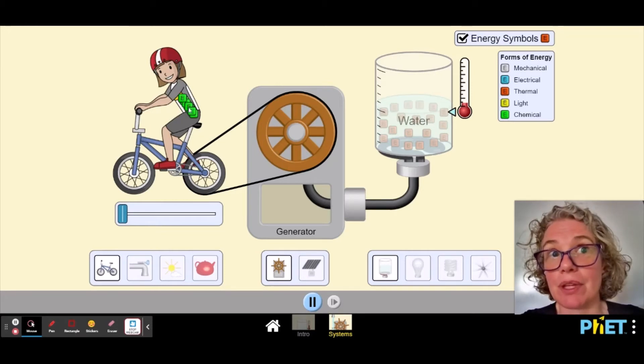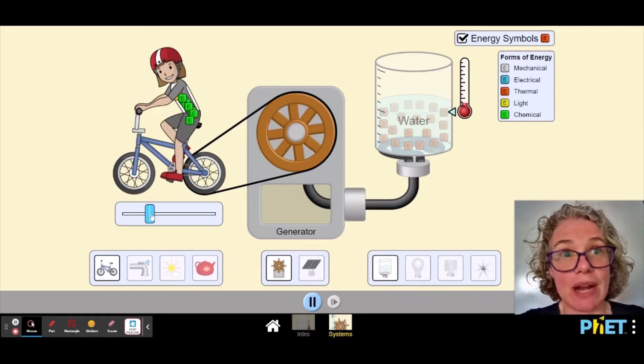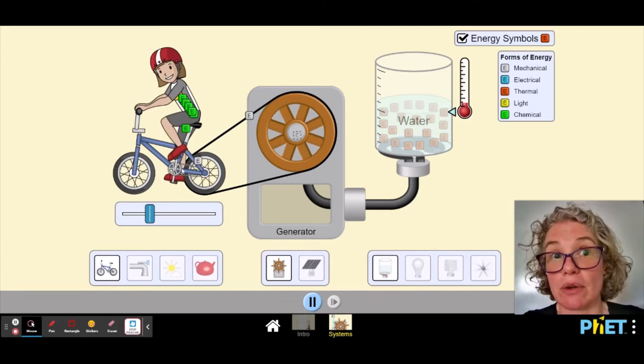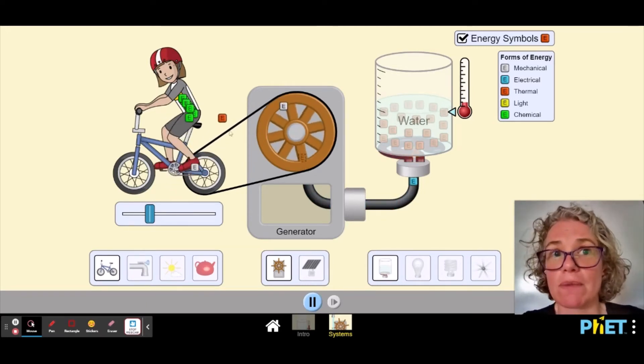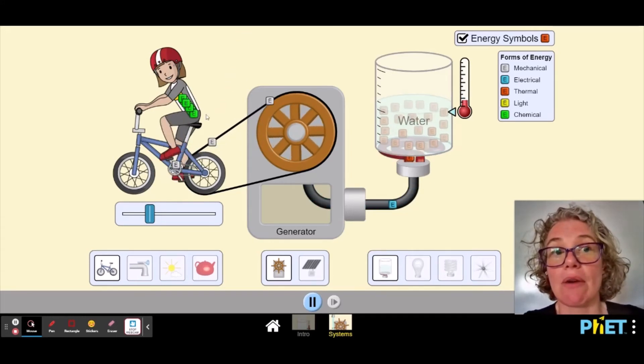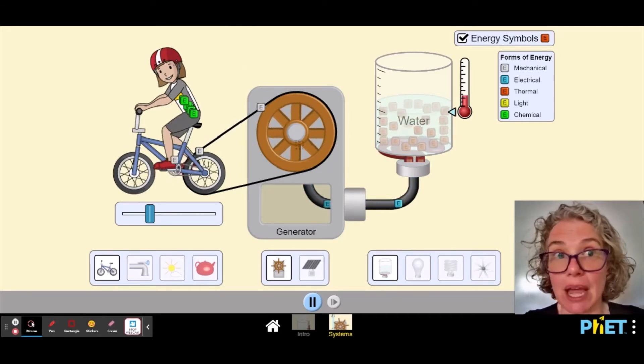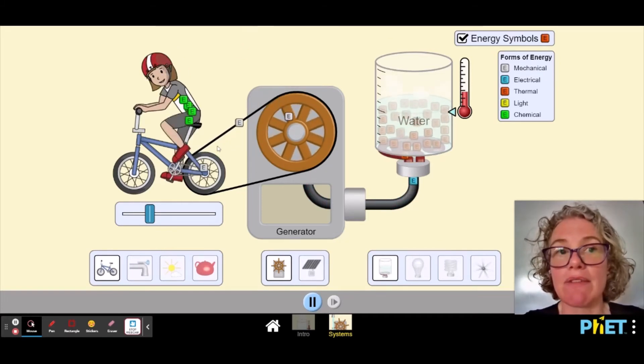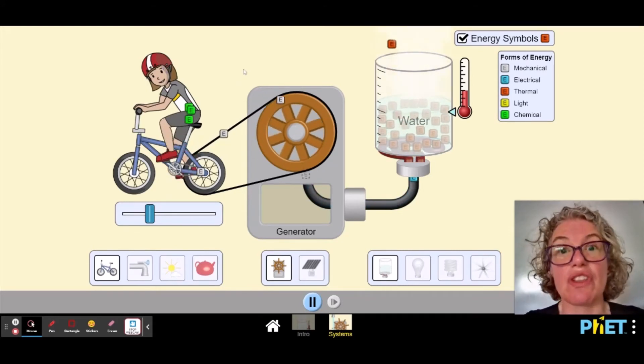Like right now, do you see how this bike rider, she's got chemical energy in her. That must mean she's eaten breakfast. So watch what happens. She's going to use her chemical energy to create movement. So they're showing the chemical energy that's in her body, changing forms into electrical energy. Oh, what was that? That red. That was thermal energy. There must be some friction here in the bike. So some of her starting energy, not all of it is going into the motion of this wheel. Some of it is coming off, because friction made it turn into thermal energy.